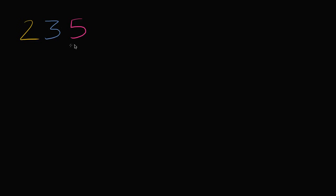So I have a number written here. It's a two, a three, and a five. And we already have some experience with numbers like this. We can think about what it represents. To think about that, we just have to look at the actual place values. This rightmost place right over here is the ones place. So this five represents five ones, or you could say that's just going to be five.